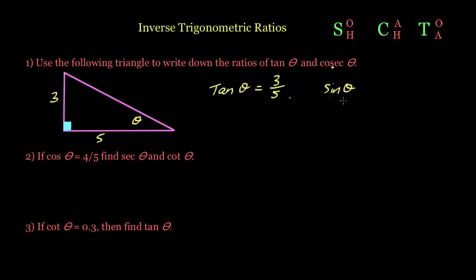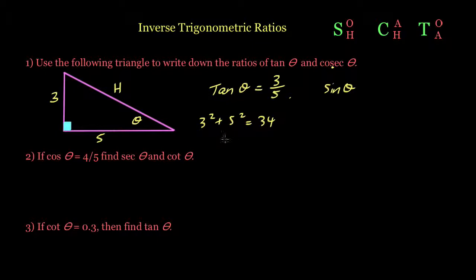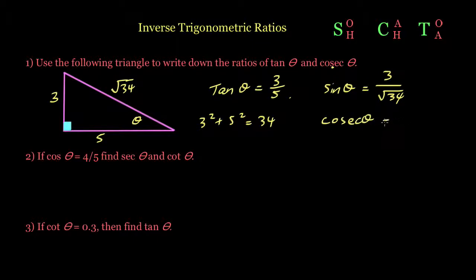Before we get cosec theta, we first need sine theta, which is opposite over hypotenuse. The opposite is 3, but we don't yet have the hypotenuse, so we use Pythagoras: 3 squared plus 5 squared gives us 34, so the hypotenuse is the square root of 34. Therefore sine theta is 3 over √34, and cosec theta — its inverse — is √34 over 3.